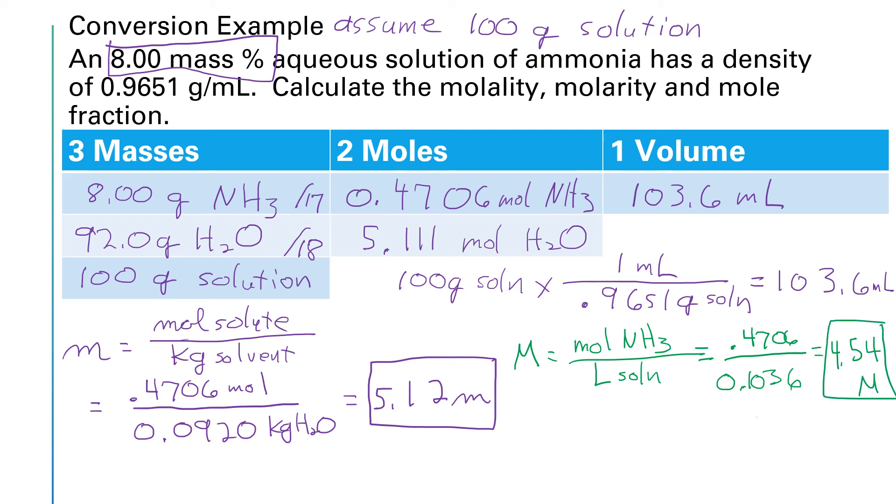And the last thing we're asked to calculate is the mole fraction. I'm going to do that one in red. And to find the mole fraction, we're going to take the moles of solute divided by the total moles. Because this is a fraction instead of a percent, we do not multiply by 100. So the moles of the solute, that's the moles of ammonia, so 0.4706. And then the total moles will be 0.4706 plus the moles of water, which are 5.111.